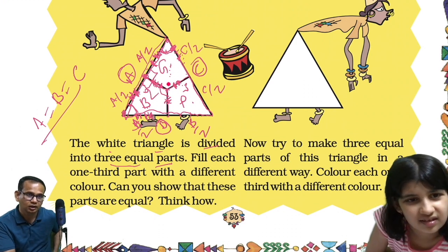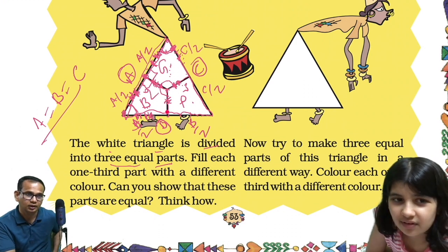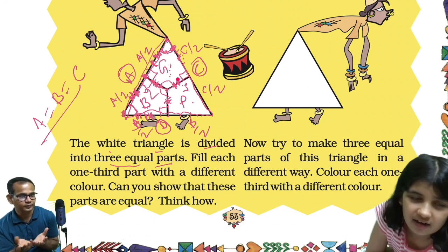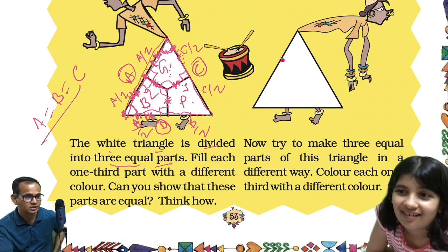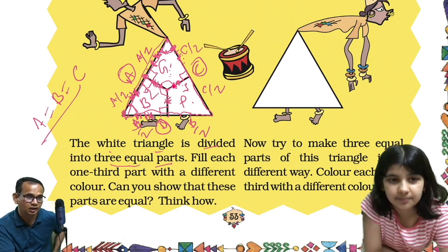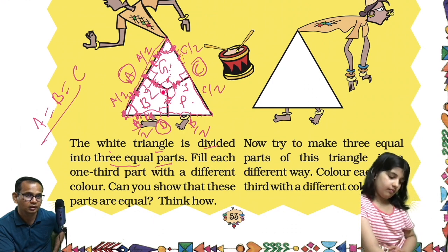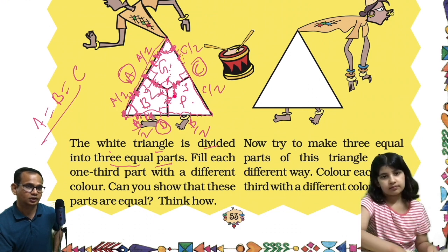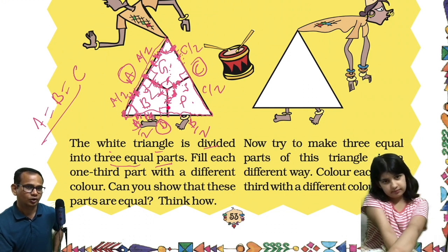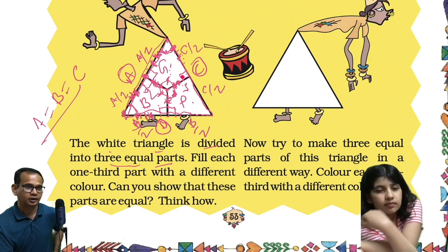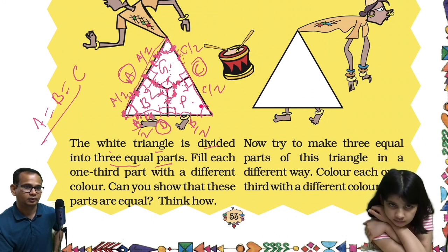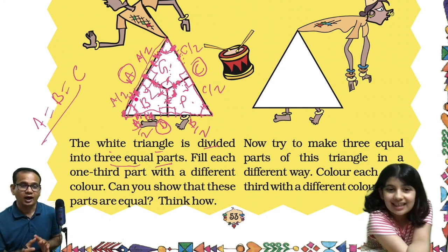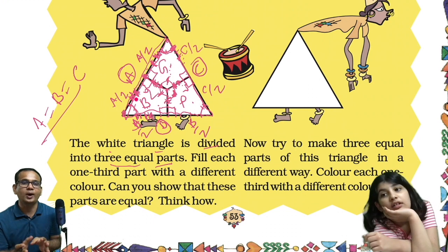This is 90 degrees. So the angles are similar — this angle, this angle, and this angle. Three angles are similar. This is a right angle, this is a right angle, this is a right angle, and this is a right angle. Since the angles are similar and the sides are equal, the portions are equal. I hope you all have understood this.